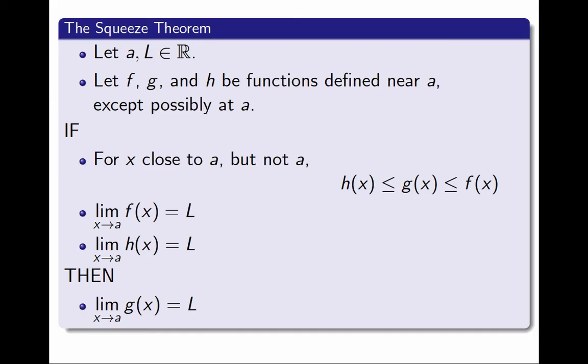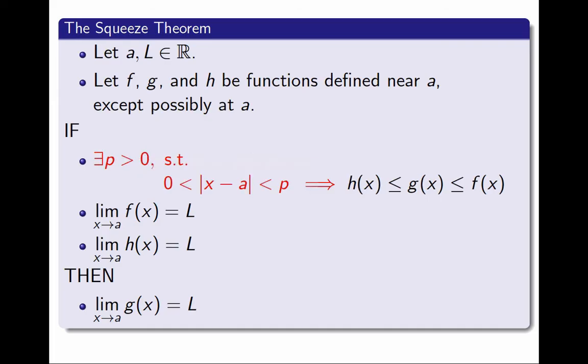This is how I ended the previous video, and I will take it as a starting point now. But I want to make a small modification to the first hypothesis. I am requiring the inequalities to be true when x is close to a, but not a. Saying that x is close to a is the same as saying that x is in an interval centered at a. So I will require that there exists a positive radius p, such that when the distance between x and a is between 0 and p, then the inequalities are true. This is equivalent, but a bit more formal, which will be useful for the proof.